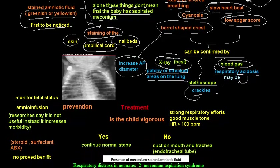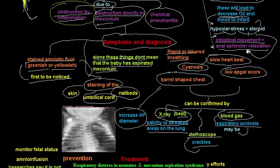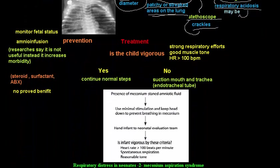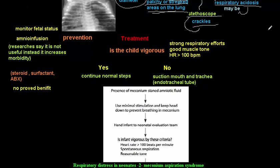To summarize diagnosis: suspect meconium aspiration from staining of amniotic fluid, skin, cord, and nail beds, along with symptoms of rapid or labored breathing, cyanosis, and low heartbeat. Confirm with chest X-ray showing patchy or streaked areas and increased anterior-posterior diameter. Auscultation may reveal wet crackles.